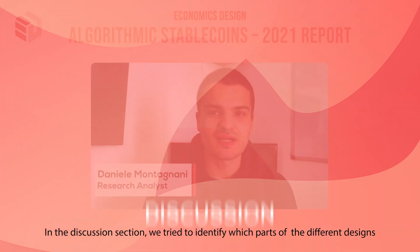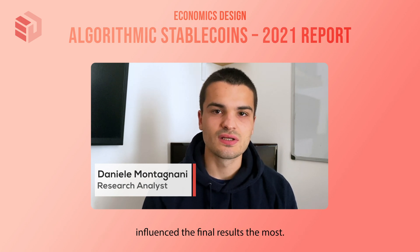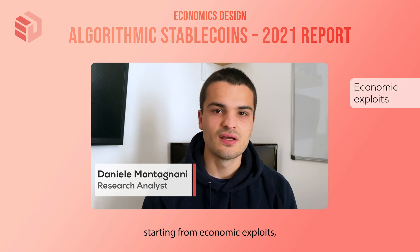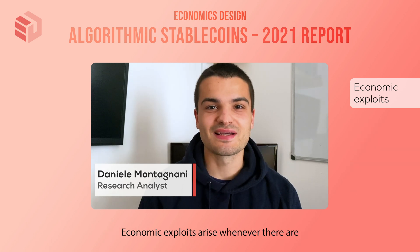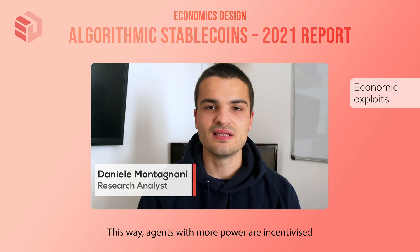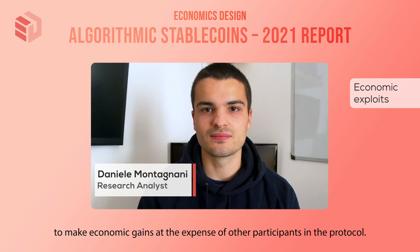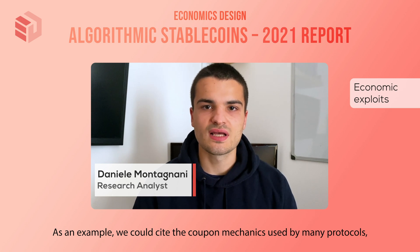In the discussion section, we tried to identify which parts of the different designs influence the final results the most. We identified three main risk categories: economic exploits, price volatility, and technical risks. Economic exploits arise whenever there are power imbalances between agents in the protocol, incentivizing more powerful agents to make economic gains at the expense of other participants. As an example, we could cite the coupon mechanisms used by many protocols when they had to enact a contractionary monetary policy.